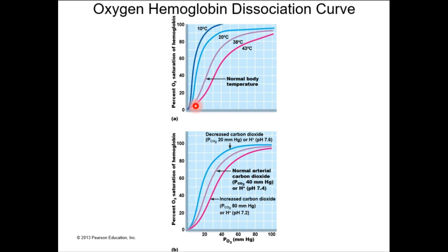When the curve shifts to the right, that means even in the presence of more oxygen, less of it will be bound up in hemoglobin. That enables us to release more oxygen into tissue.